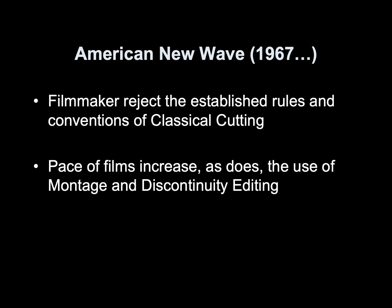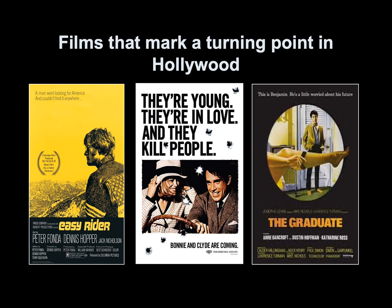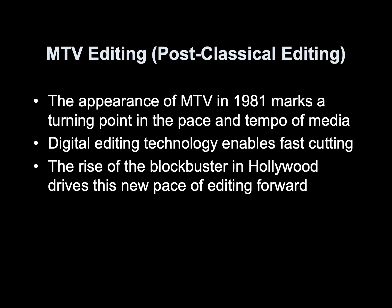American New Wave, 1967 and beyond: Filmmakers reject the established rules and conventions of classical cutting. The pace of films increases, as does the use of montage and discontinuity editing. Films that mark a turning point in Hollywood include Easy Rider, Bonnie and Clyde, and The Graduate.